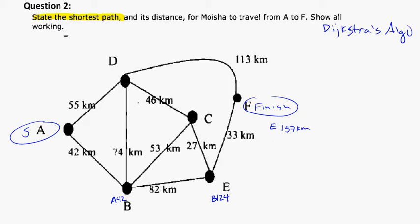Let's see what else I could try here. If I go from A to D, here I would say I'm coming from A, I've traveled 55 kilometers. Let's go down here to C. So I'm coming from D in this case. The last node I was at was D. I've traveled 55 plus 46, so that's a total of 101 kilometers.